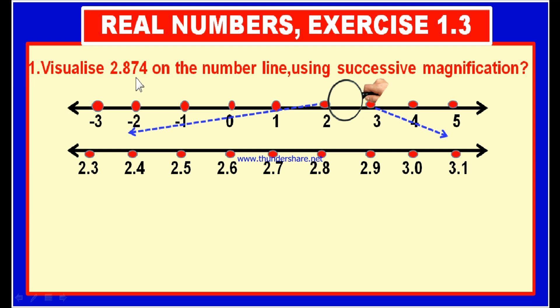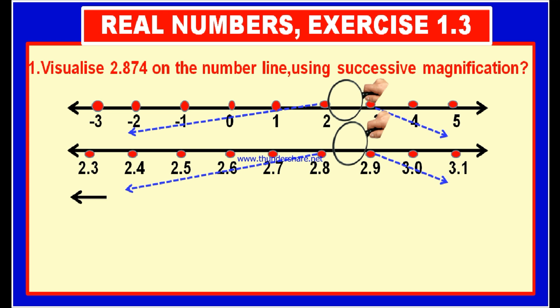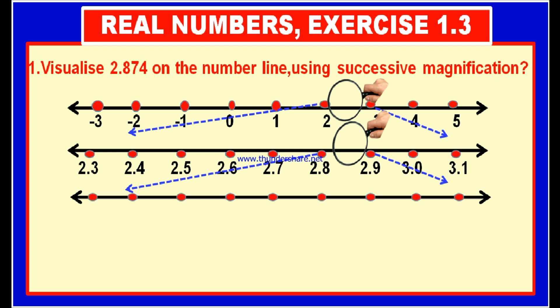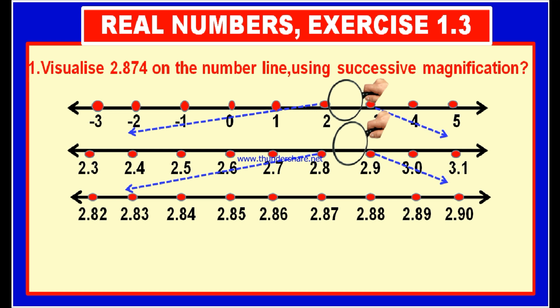Now, 2.87 — up to the first decimal place it is 2.8. If we take the number up to the first decimal place, it is 2.8. So 2.87 lies between 2.8 and 2.9. Therefore, the part between 2.8 and 2.9 is to be magnified. We know there are infinite points between 2.8 and 2.9. Again, we magnify this part and the magnified number line shows: 2.81, 2.82, 2.83, 2.84, 2.85, 2.86, 2.87, 2.88, 2.89, 2.90.